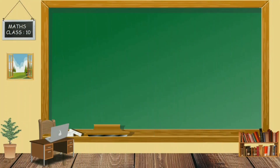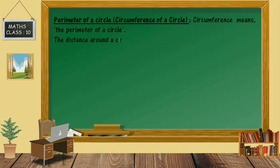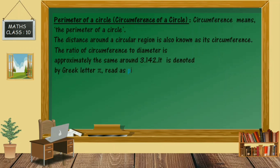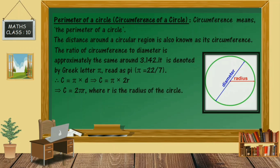Next is the perimeter of a circle. Circumference means the perimeter of a circle. The distance around a circular region is also known as its circumference. The ratio of circumference to diameter is approximately 3.142, denoted by the Greek letter pi. This value was given by the great Indian mathematician Aryabatta, who stated that pi is approximately equal to 3.14. For practical purposes, we also use pi equals 22/7. So circumference equals pi×D or 2×pi×R, where R is the radius and D is the diameter.